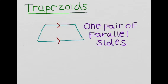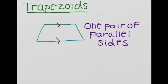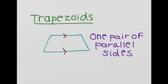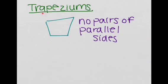Now let's move on to trapezoids. Trapezoids have one pair of parallel sides — this side is parallel to this side. Now let's look at a trapezium. A trapezium has no pairs of parallel sides. So basically, a parallelogram has two pairs of parallel sides, a trapezoid has one pair of parallel sides, and a trapezium has no pairs of parallel sides.